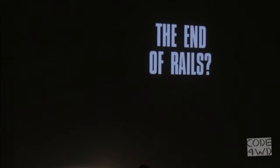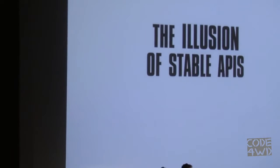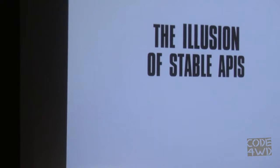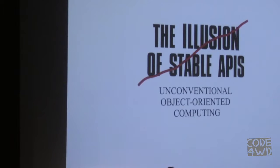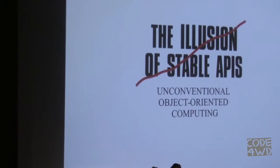So this talk used to be called 'The End of Rails' — people said that was really negative. So I changed it to 'The Illusion of Stable APIs,' which basically means nothing. But given all the awesome talks already, I renamed it to 'Unconventional Object-Oriented Computing.' I'm going to talk about object orientation and amoebas.